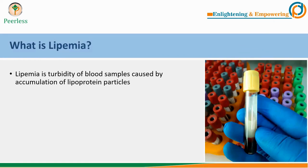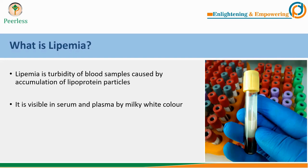To begin with, let us see what is lipemia. Lipemia is turbidity of blood samples caused by accumulation of lipoprotein particles. After centrifugation, if the plasma or serum color is milky white, we call it a lipemic sample. Please note that you cannot visually detect lipemia in whole blood, naturally because blood is red.